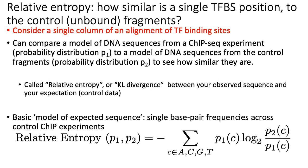The general assumption is that if a TF is recognizing a specific base of its binding site — if it's very sequence specific — then it shouldn't look like the control sequences that are unbound on average. Relative entropy is also sometimes called KL divergence, and it's a way of measuring how different a position of your TF binding site alignment is from your expectation as defined by the control data.